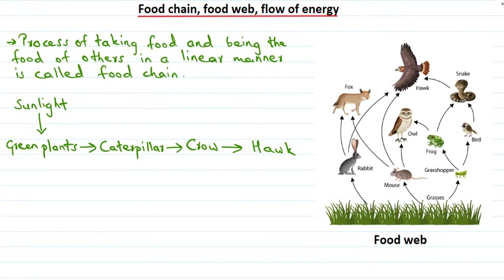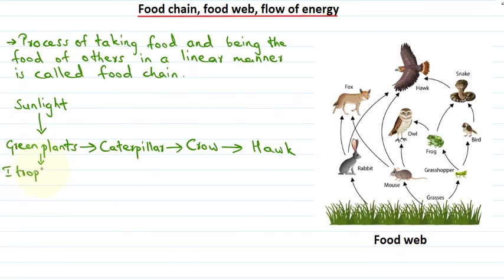The hierarchical position of an organism in a food chain is called trophic level. The producers — the green plants — photosynthesize and prepare their own food. Producers will always occupy the first trophic level. So green plants are the first trophic level.